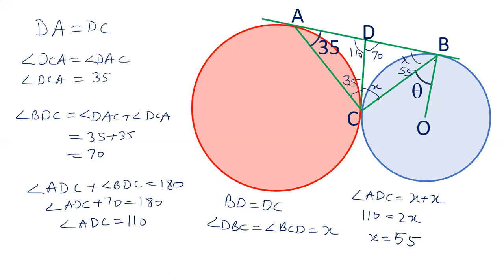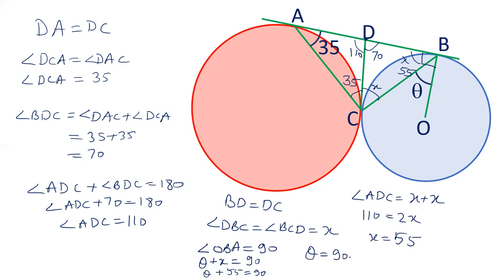Finally, OB is perpendicular to AB because the radius and tangent are perpendicular at the point of contact. So angle OBA equals 90 degrees. Angle OBA equals angle OBC plus X, so 90 degrees equals angle OBC plus 55 degrees. Therefore, the value of angle OBC is 90 minus 55, which is 35 degrees.